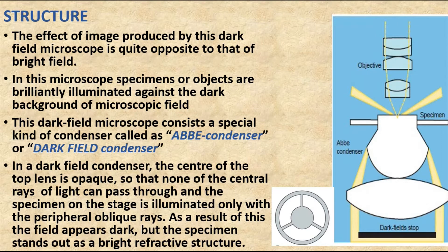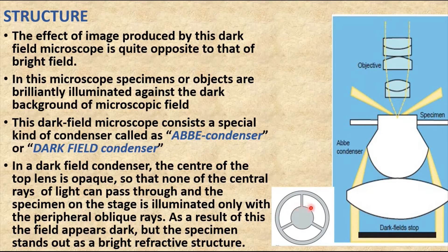The specimens or objects are brightly illuminated against the dark background of the microscopic field. This occurs because of introducing a special kind of condenser called the dark field condenser or the Abbe condenser. We can convert a bright field microscope into a dark field microscope simply by using this special condenser.